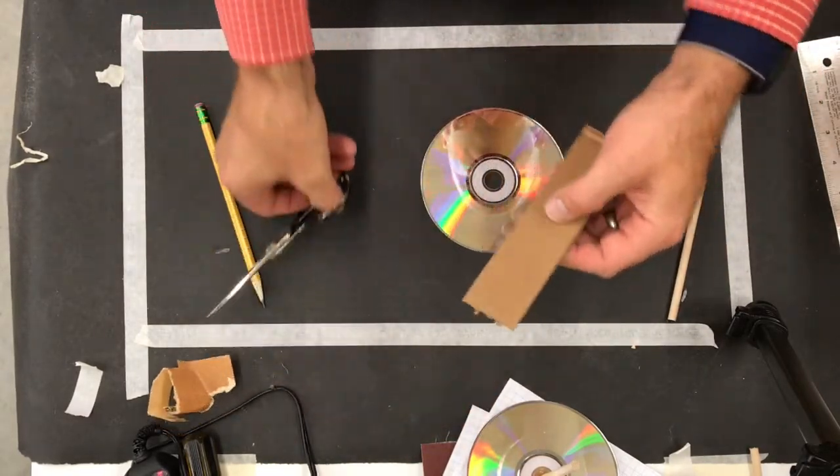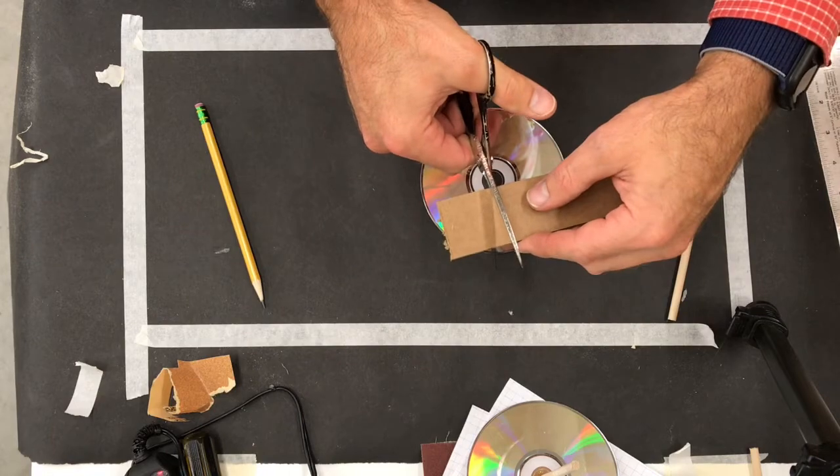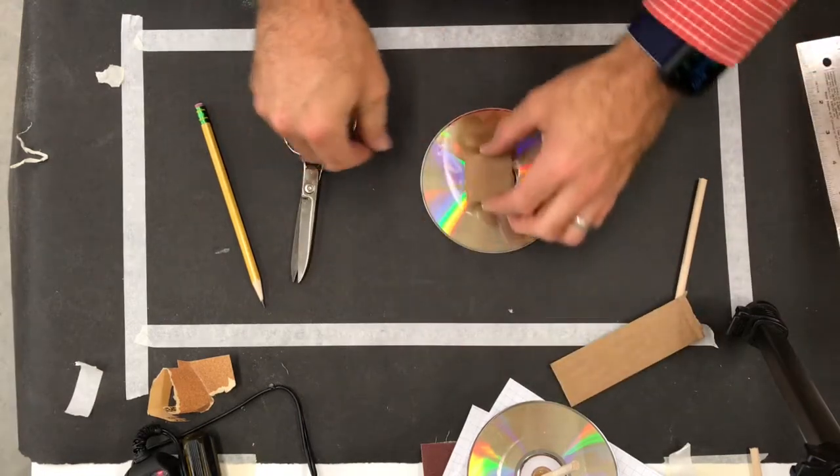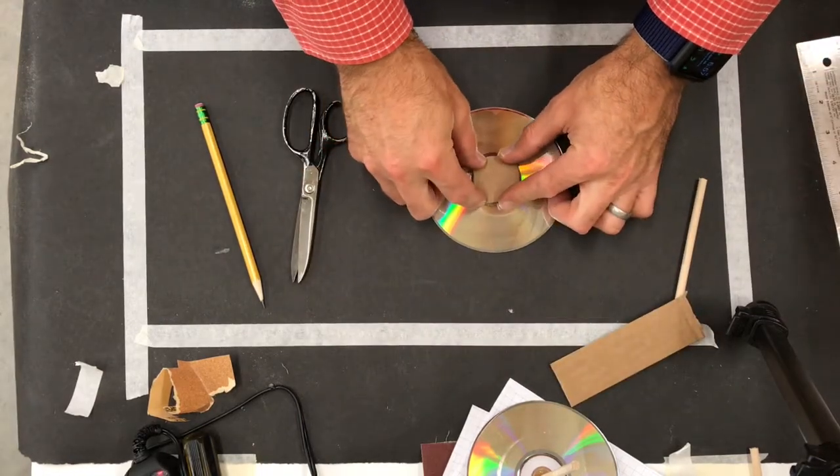So what you're going to do is take a piece of cardboard and cut it into a square, and then that square can be taped onto the wheel.